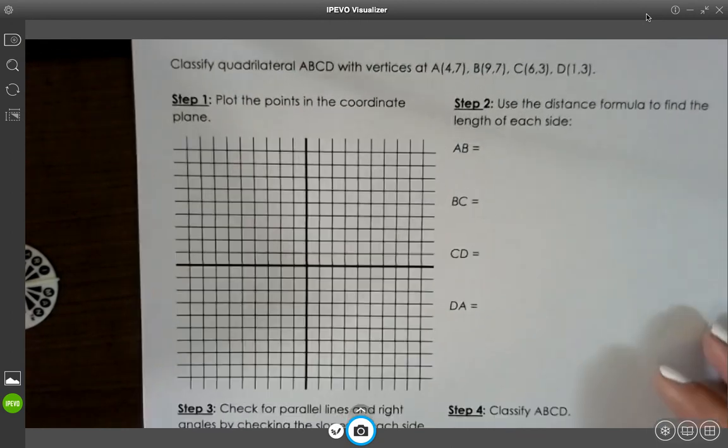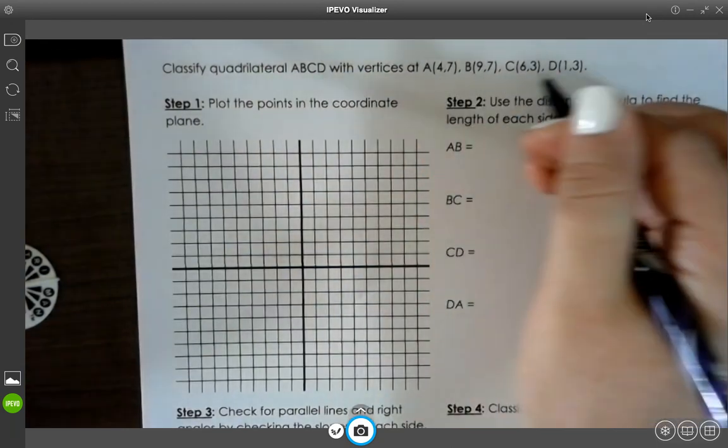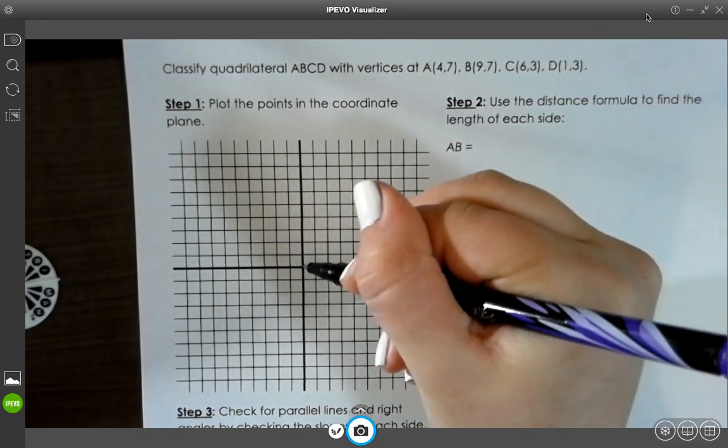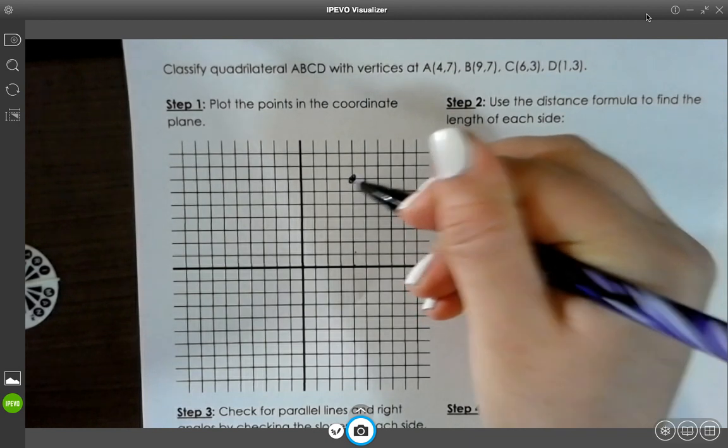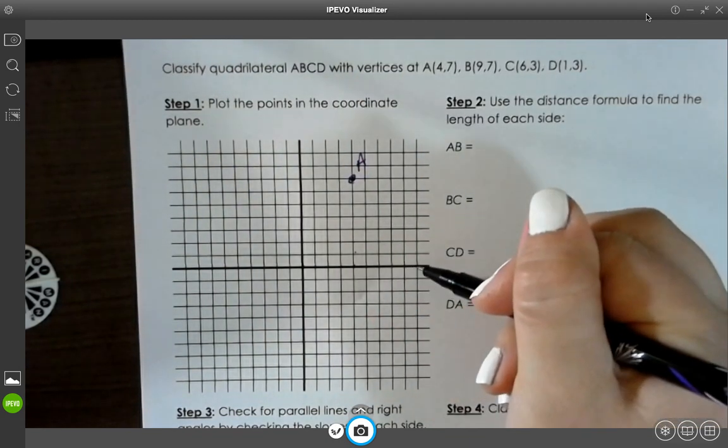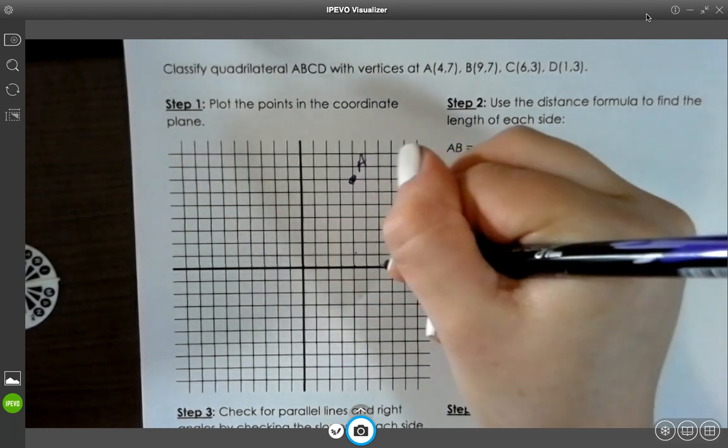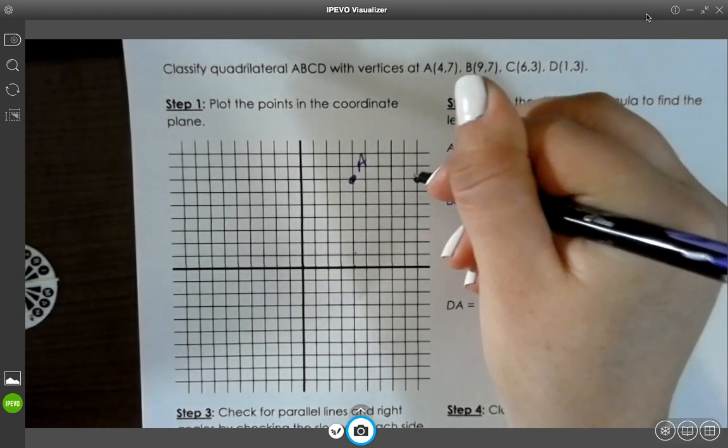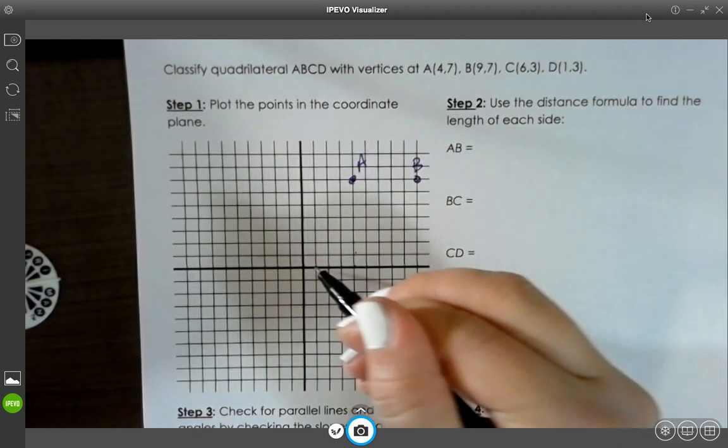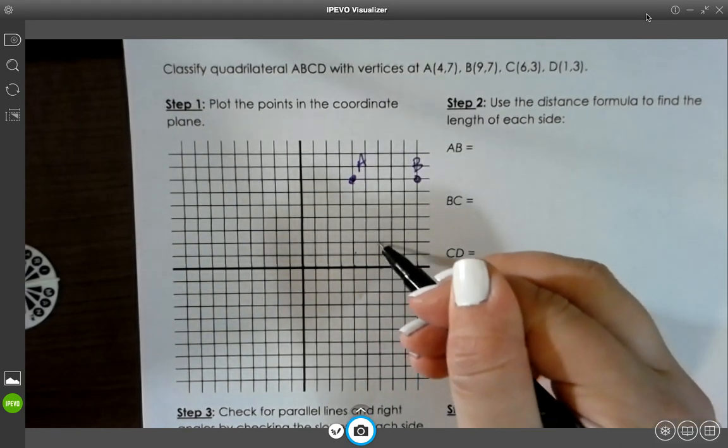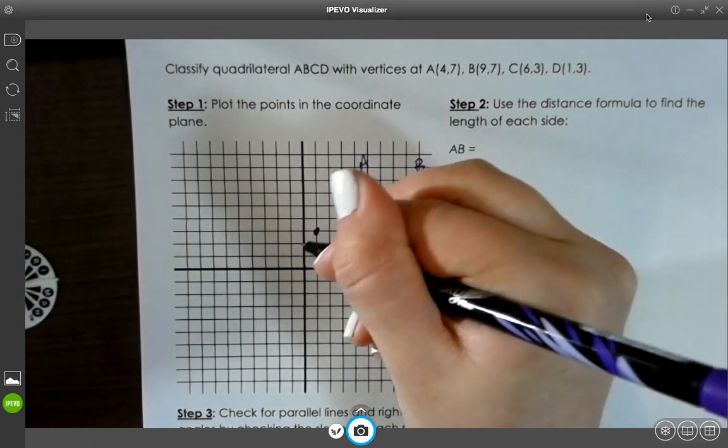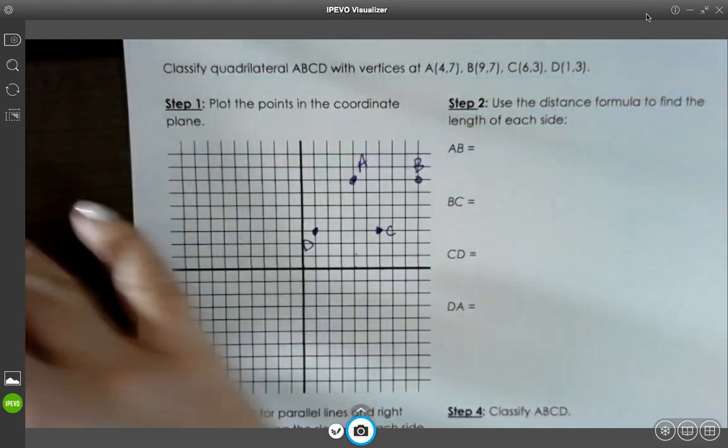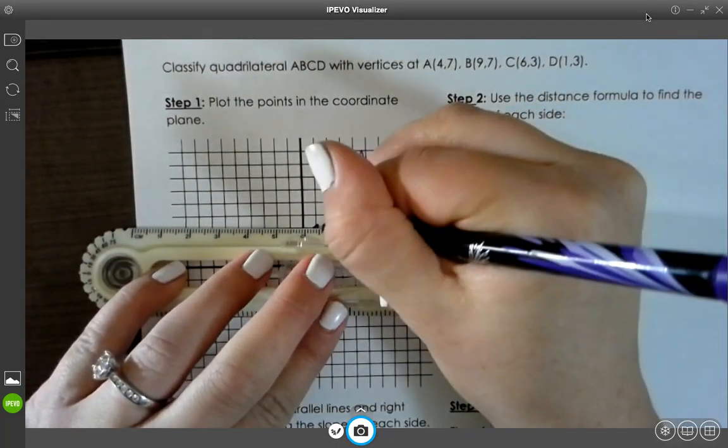Okay, now, if you're given points, you can plot them on a graph. So A is 4, 7. B is 9, 7. C is 6, 3. And D is 1, 3. And then if I connect the dots, connect the points.